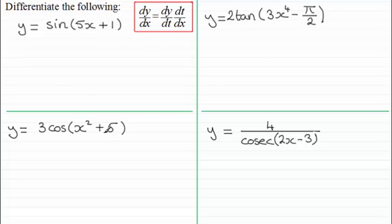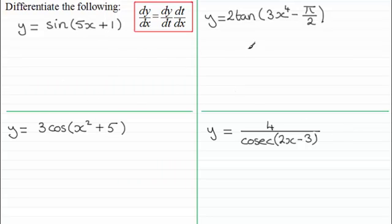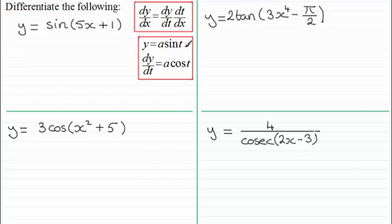In each of these examples, what we've got is that they're based around the sine of some function of x, or the cosine of some function of x, or the tan of some function of x. This example might look a bit strange but it can be changed into one of these particular forms. When it comes to y equals the sine of all of 5x plus 1, we can see this as y equals a sine t.